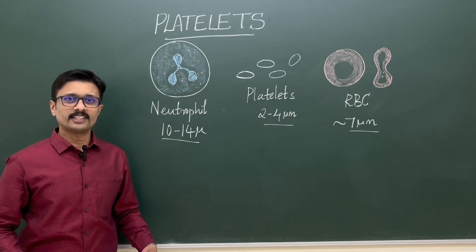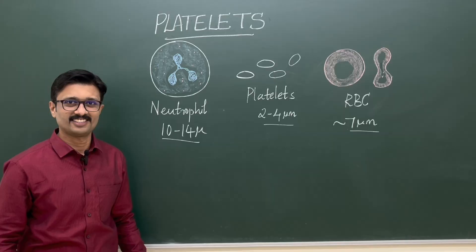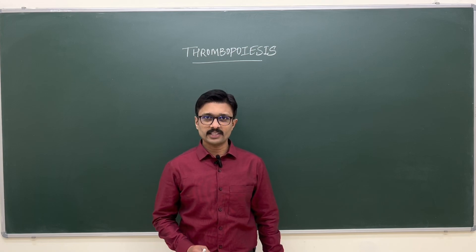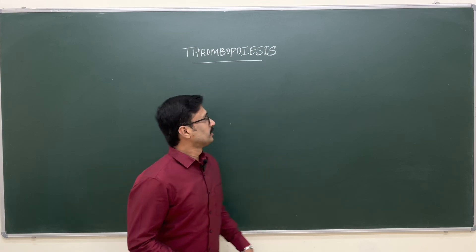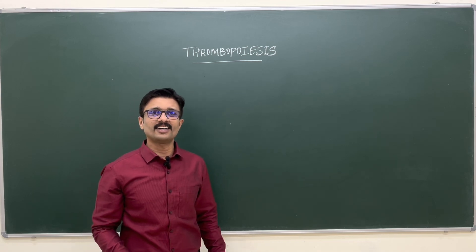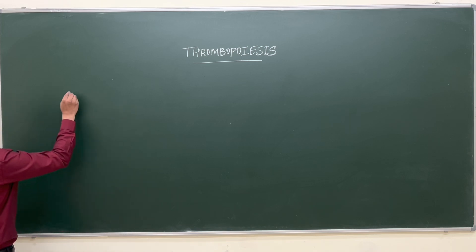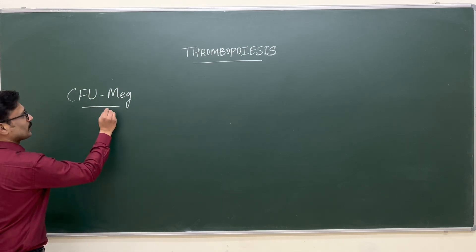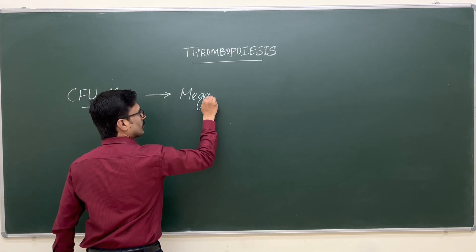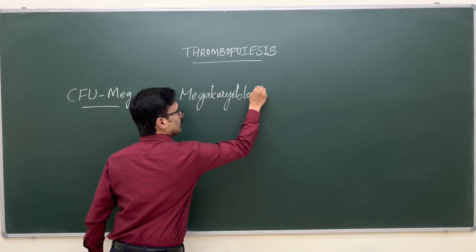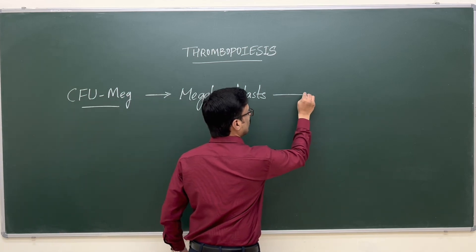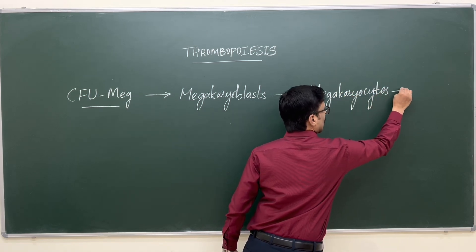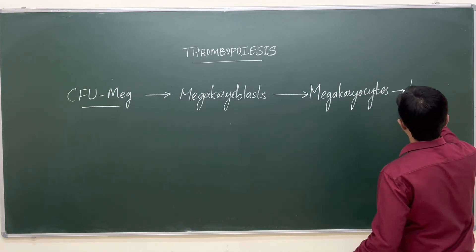The platelets are synthesized within the bone marrow from precursor cells called megakaryocytes. The formation of platelets from megakaryocytes in the bone marrow is called thrombopoiesis — the synthesis of thrombocytes, which is the other name for platelets. Platelets are derived from colony forming unit megakaryocytes, which differentiate to form megakaryoblasts, which then mature to form megakaryocytes, finally giving rise to platelets.